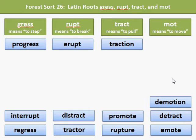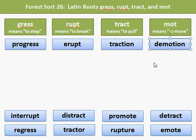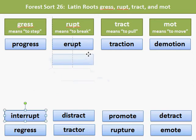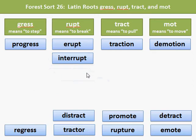Traction includes the root tract, and traction is the act or condition of pulling. You need to have traction to be able to pull something out of an area. The root mote is found in demotion — demotion is the process of demoting, or moving back or moving apart. Interrupt includes the root rupt, which means to break. To interrupt a conversation is to break into it, or to break apart a conversation between two people.